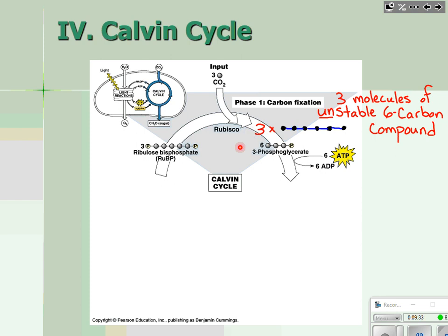Rubisco takes carbon dioxide — one carbon — and bonds it onto a five-carbon sugar already present in the stroma called ribulose bisphosphate, or RuBP. Five carbons plus one more carbon makes a six-carbon sugar. After the Calvin cycle has turned three times, that's three molecules of CO2, each bonding to a molecule of RuBP, making three of these six-carbon compounds.